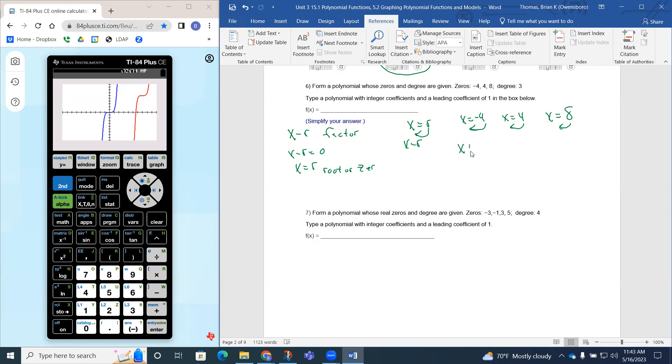This is going to be x plus four. And we're going to then have this x minus four. And we're going to have this x minus eight. Those are going to be my three factors.